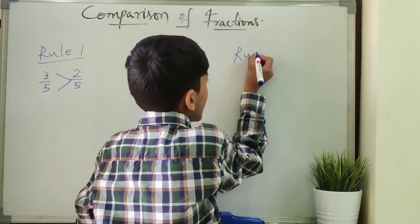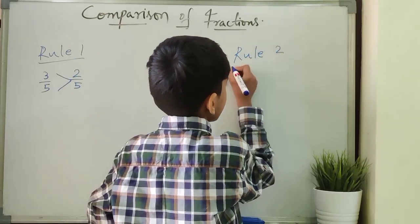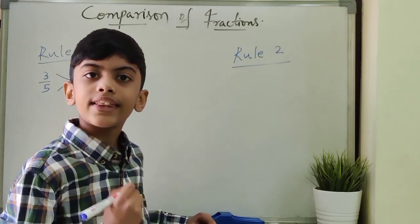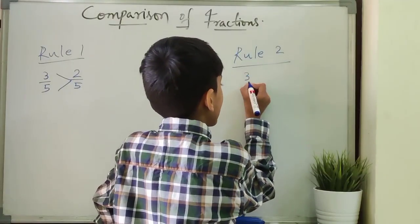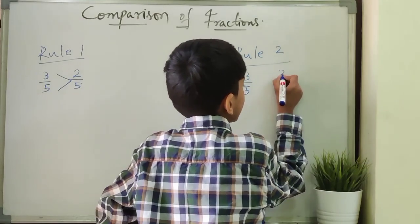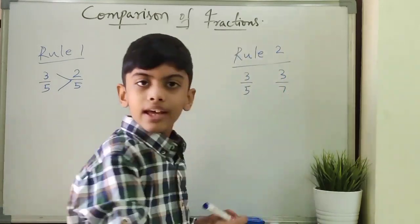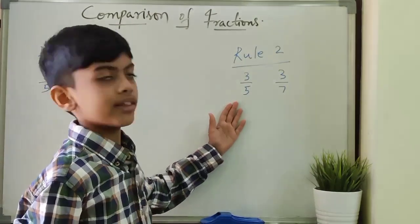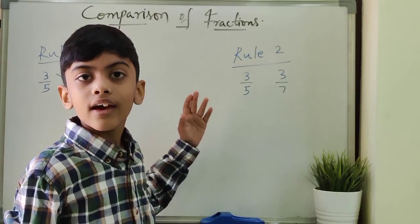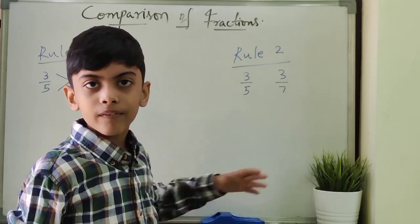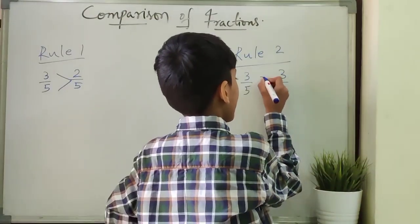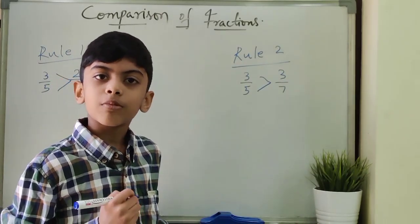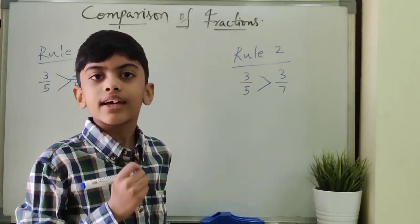Next, Rule 2: if we have fractions with same numerators, for example 3 by 5 and 3 by 7, here numerators are equal, so compare denominators. In denominators, 5 is less than 7, so 3 by 5 is greater than 3 by 7. The fraction with the smaller denominator is greater.